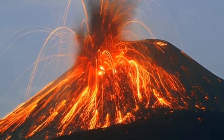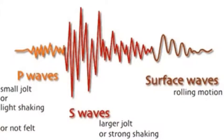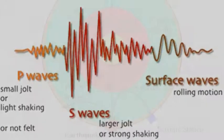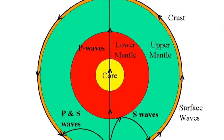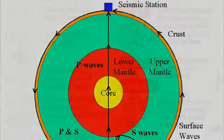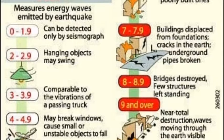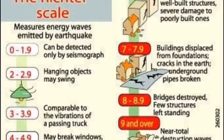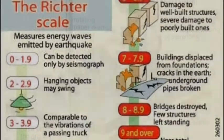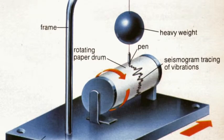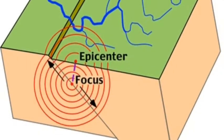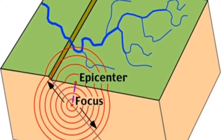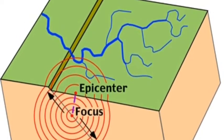Students will also learn about earthquakes and the different types of seismic waves. Different types of waves penetrate different layers of the Earth's crust and have different effects when they hit the surface. Students will learn about the Richter scale — the way we measure the intensity of an earthquake — and how a seismograph works, the instrument used to measure the intensity of an earthquake by locating its epicenter.